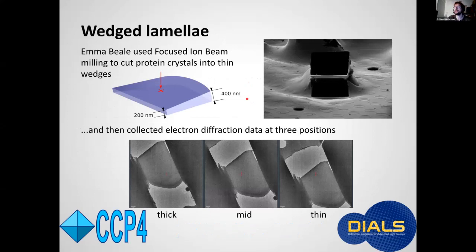So this is something that's of extreme interest clearly to attempt to investigate this experimentally. Emma Beale at Diamond Light Source took proteinase K crystals and then cut them using focused ion beam milling at EBIC but the clever trick was that she didn't cut the two faces parallel but rotated the crystal slightly between the two cuts forming wedges with thicknesses varying between about 400 nanometers at the thick end and 200 nanometers at the thin end.